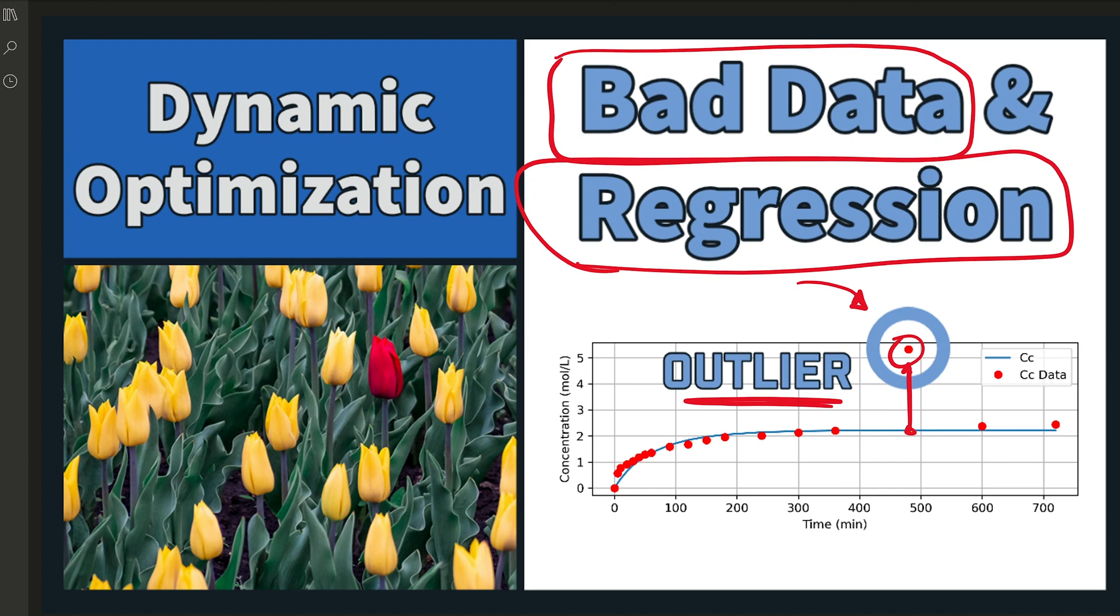Now, squared errors amplify that outlier and perhaps shift the whole curve up just due to that squared error component from that one measurement. But we want to, in this case, use an L1 norm to minimize the effect of that single outlier.